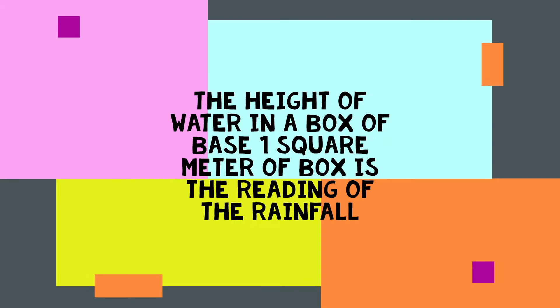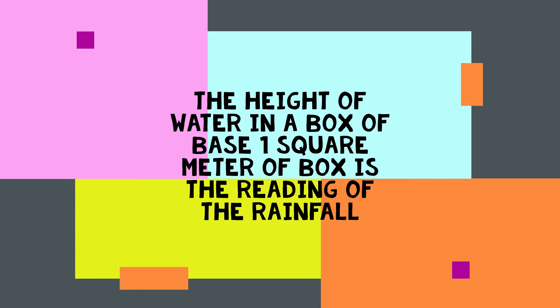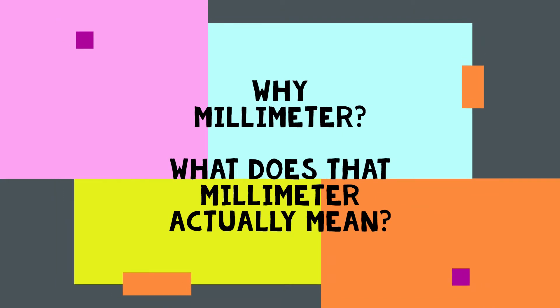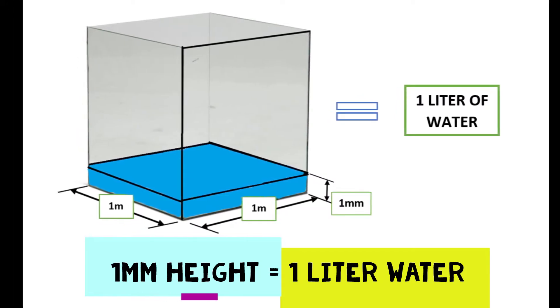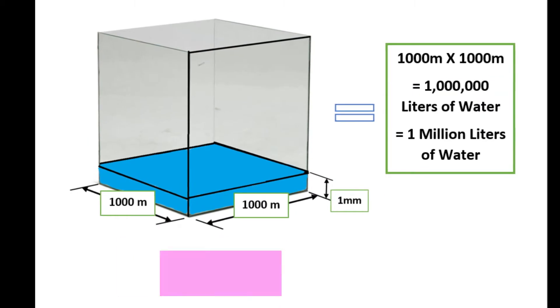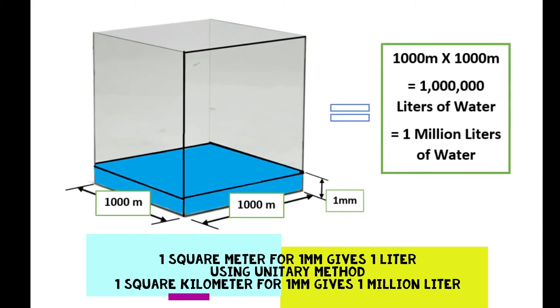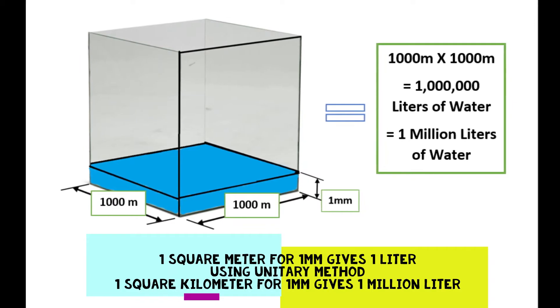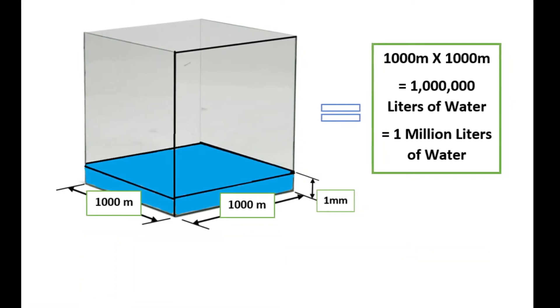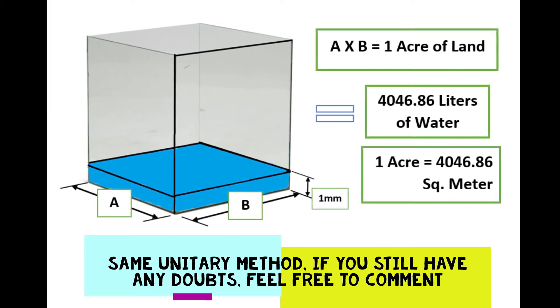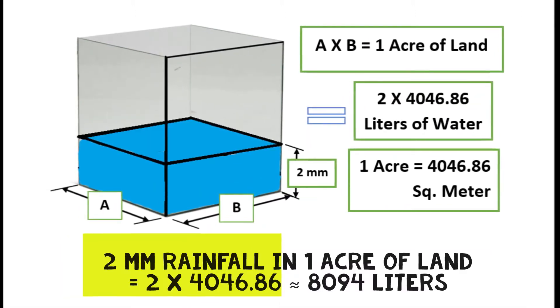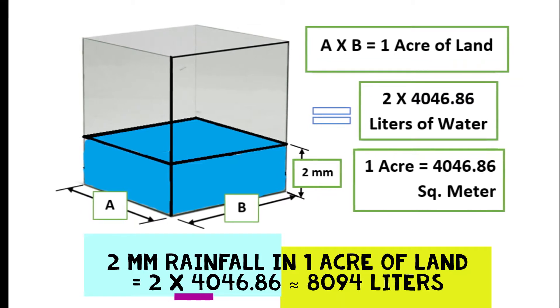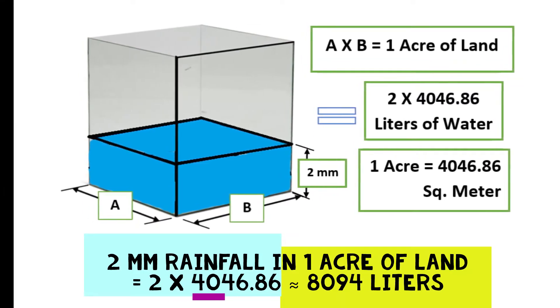So in clear words, the height of water in a 1 square meter box is the reading of the rainfall. But why millimeter, and what does that millimeter actually mean? That millimeter represents liters — the 1 millimeter height of water represents 1 liter of water. To clarify more clearly, if it rains 1 millimeter in 1 square kilometer of area, then it will be somewhere near 4,046.86 liters of water. And for 2 millimeters of rainfall in 1 acre of land, approximately 8,094 liters of water will accumulate.